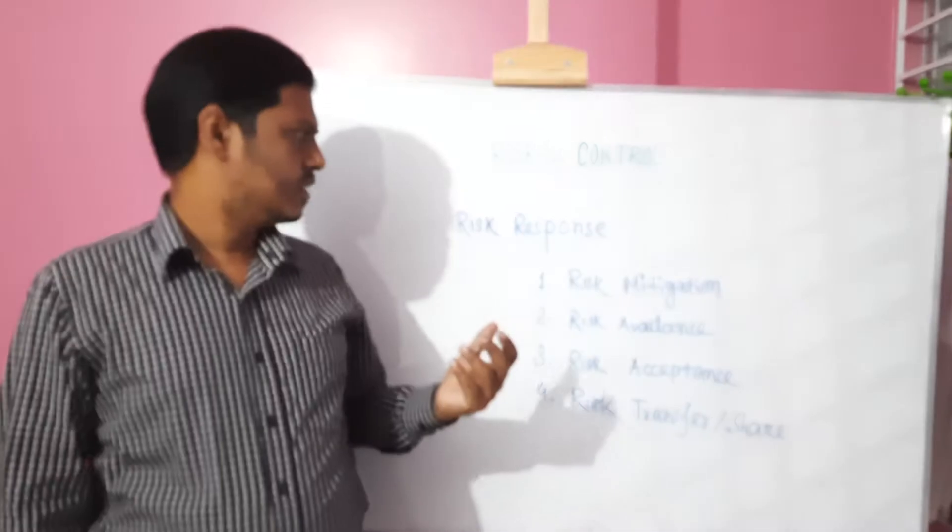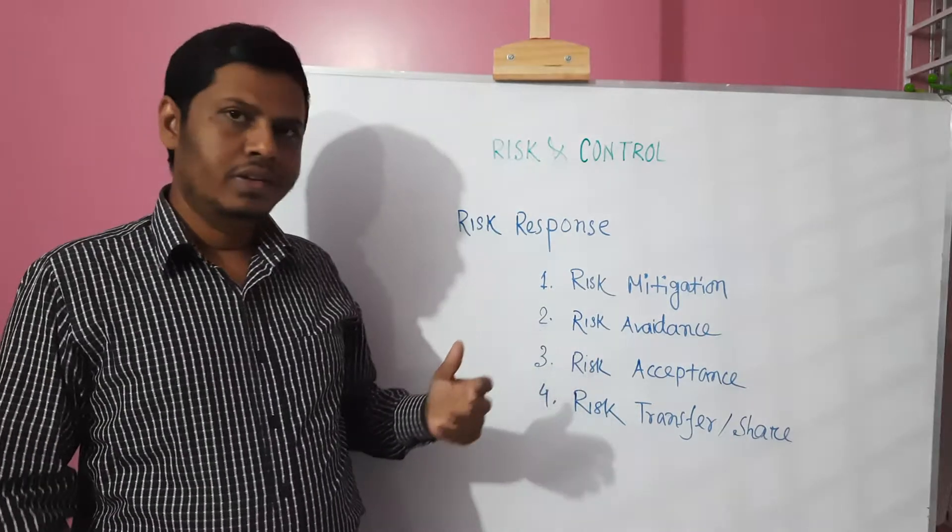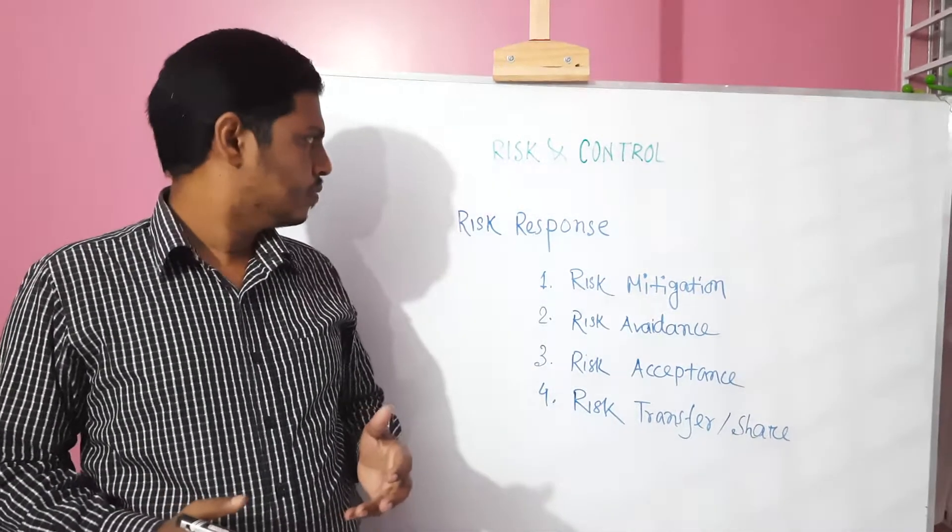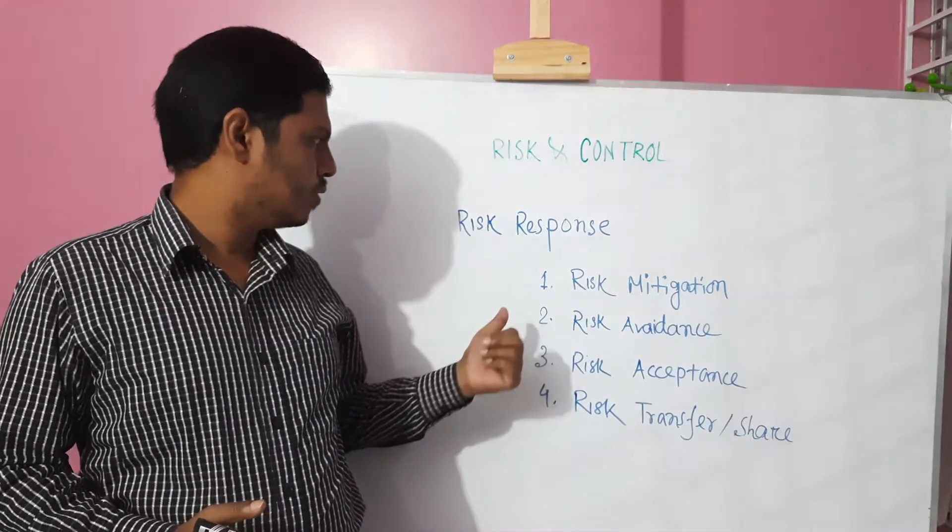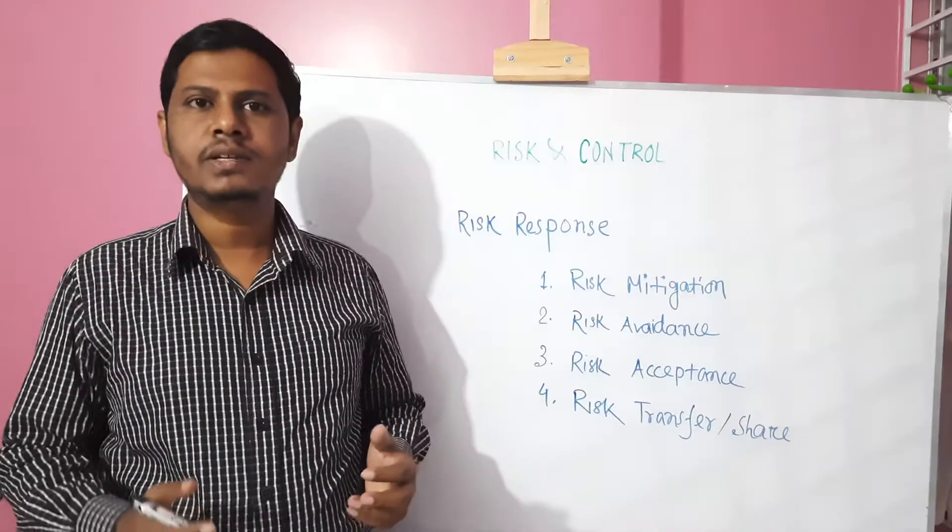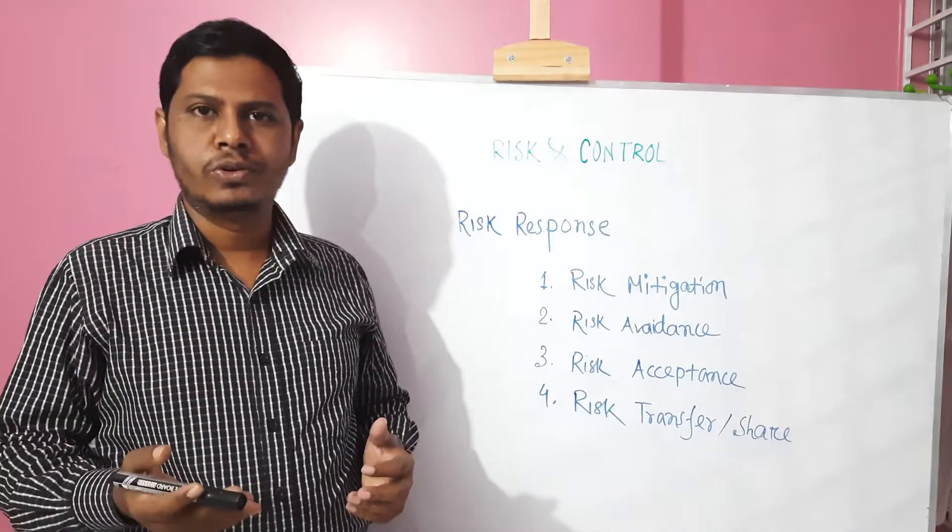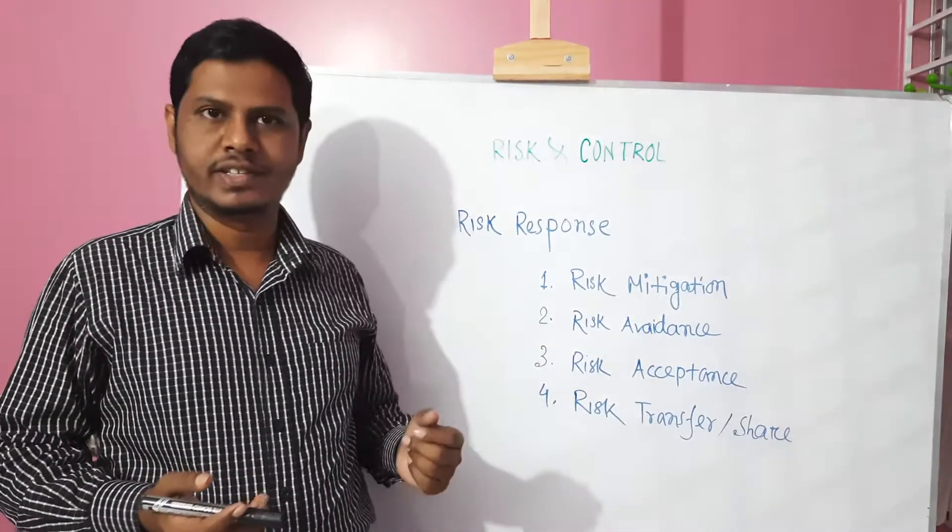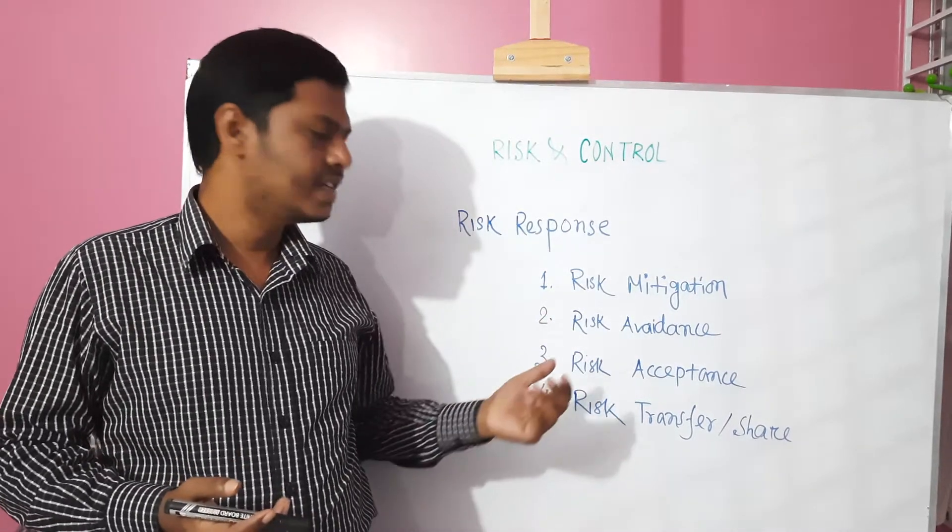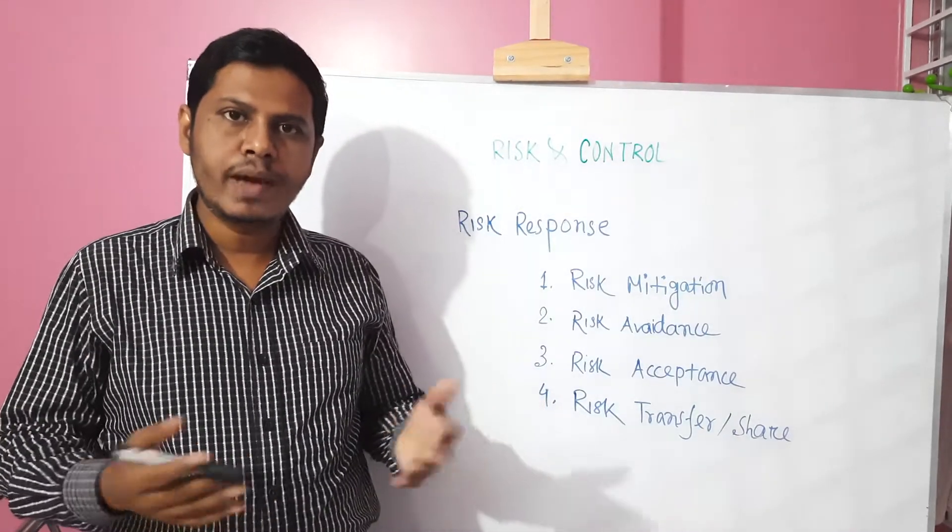Now, risk response. Actually, there are four techniques to respond to risk. First of all, risk mitigation. That means set appropriate control to mitigate the risk. It's called risk mitigation. Risk avoidance, that's why we avoid the risk.